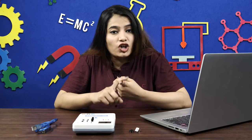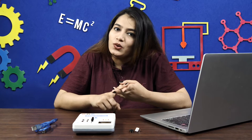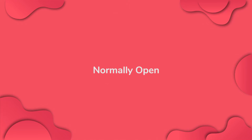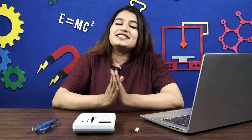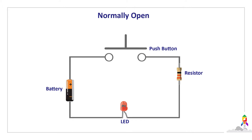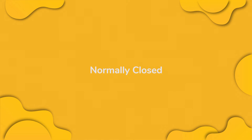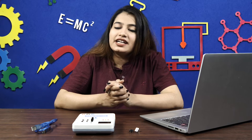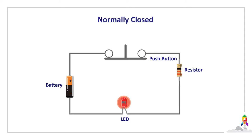There are mainly two types of push buttons: first, normally open; second, normally closed. A circuit with a normally open push button is open by default — when the user presses the button, the circuit becomes complete and current starts flowing through it. A circuit with a normally closed push button is closed by default, and the circuit breaks on pressing the button.